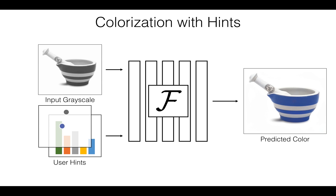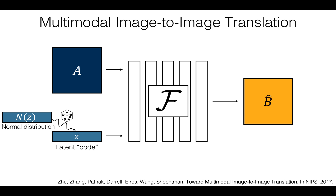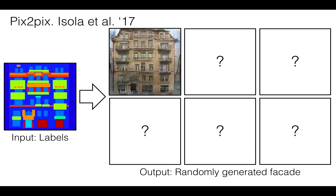Next, we investigate the more general problem of image-to-image translation. Many of these problems are multimodal in nature. For example, given this label map, what might a corresponding facade look like? The previous state-of-the-art method, Pix2Pix, can synthesize a single realistic result. However, many different facades could correspond to this label map.